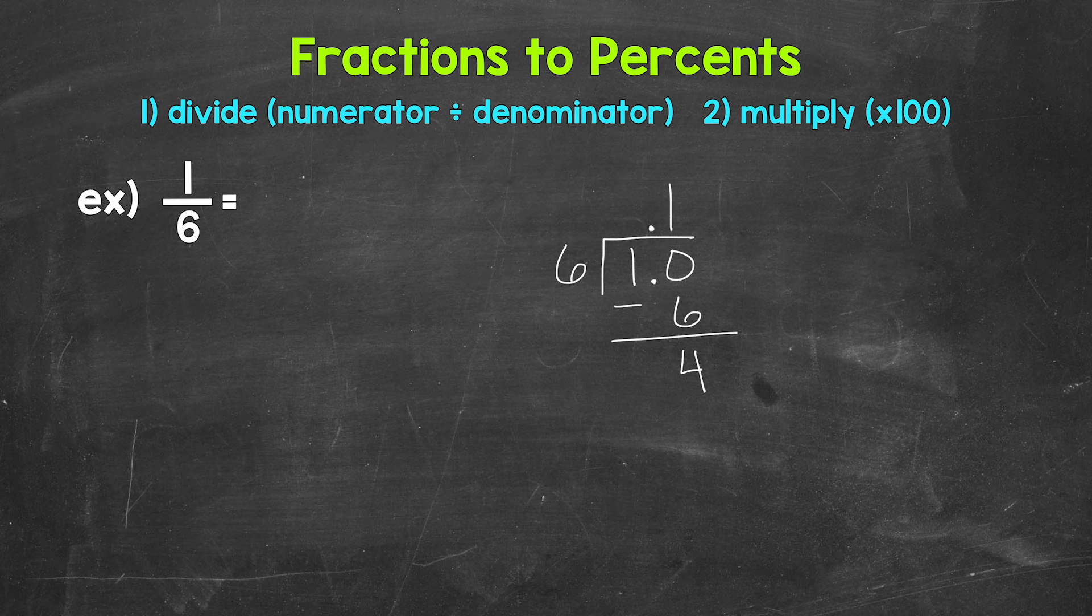Now we don't have a clean cut zero there at the bottom. So we need to continue on here by using another zero that we can bring down. So now we have 40. 40 divided by 6. How many whole groups of 6 in 40? Well, 6.